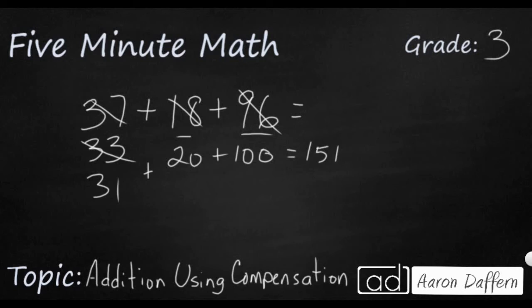Let's, once again, line it up the old-fashioned way to make sure we didn't do anything incorrectly. So 7 and 8, that's going to be 15. Add another 6, that's going to be 21. We're going to carry that 2. 2 and 3 is 5. And that's going to be 6. And that's going to be 9 more. It is 15. So 151. So that's, once again, how compensation works.